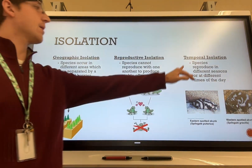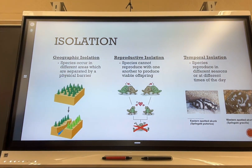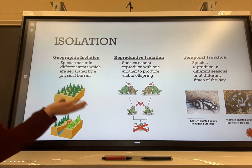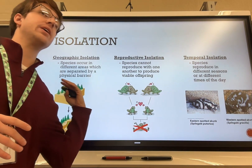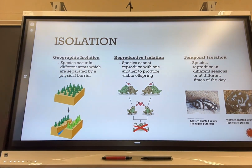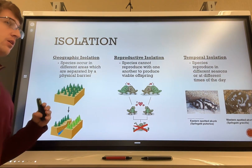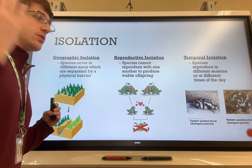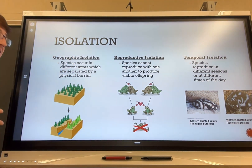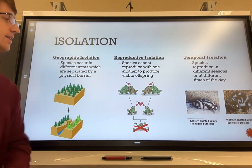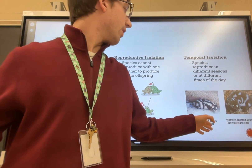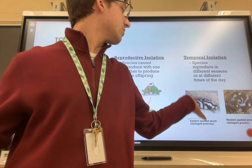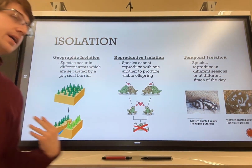The last type is temporal isolation — temporal meaning time. This could involve different seasons, such as breeding during spring versus fall, or activity during night versus day. For example, these two skunks: one breeds during the day, the other is more active at night and more likely to breed during that time.